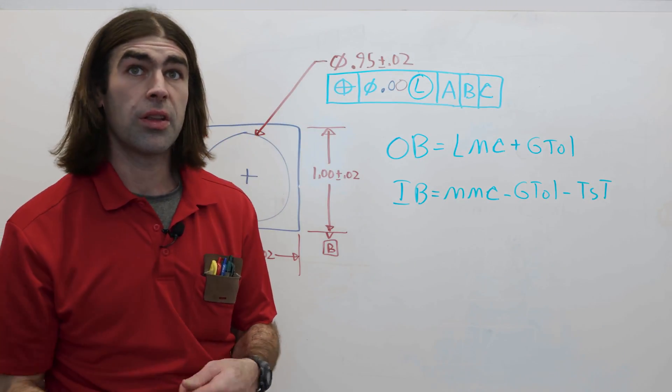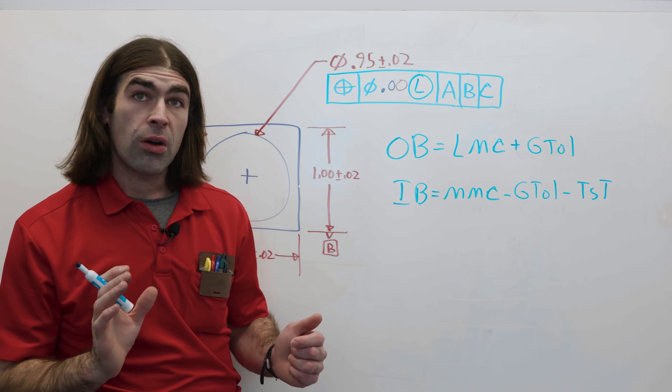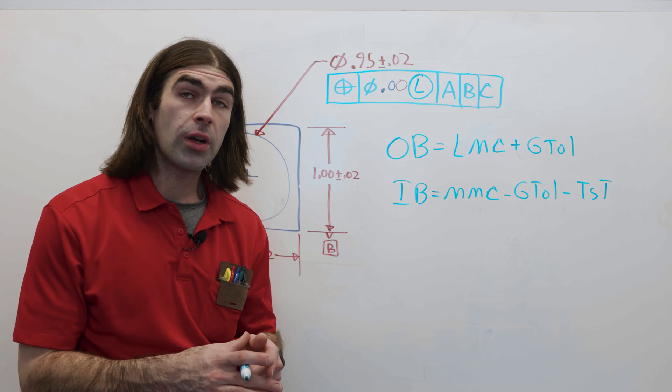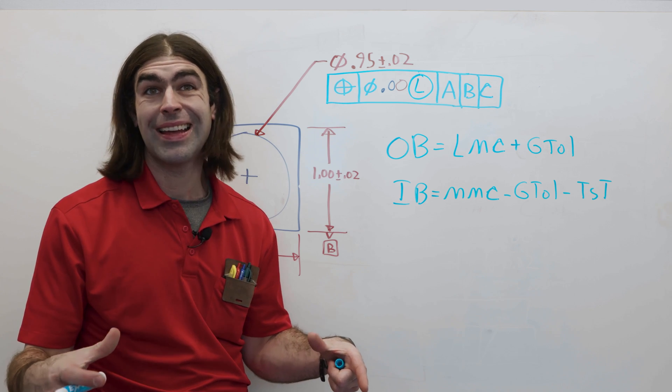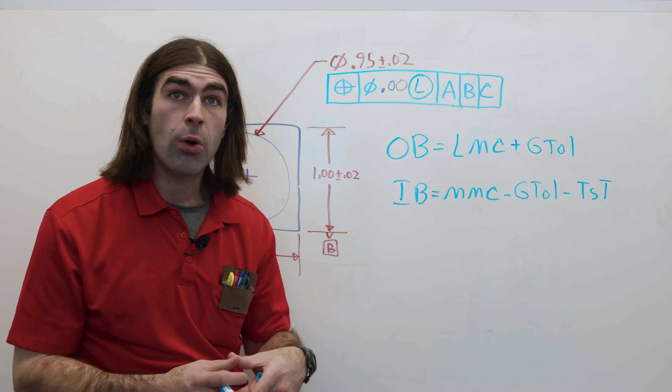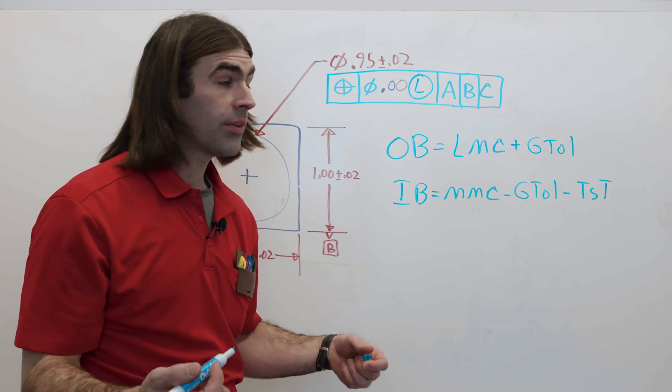So, now, we're going to get to the whole point of the video, our 0 at LMC. So, this is saying if the hole comes in at its largest size, it has 0 positional tolerance. But, if the hole comes in smaller, it gets more positional tolerance.